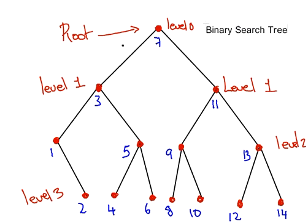The height is the maximum number of levels. So the height of this binary search tree is three because it goes down to level three. Height equals three as the maximum number of levels.